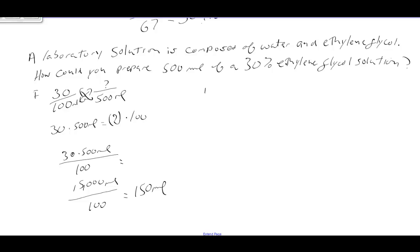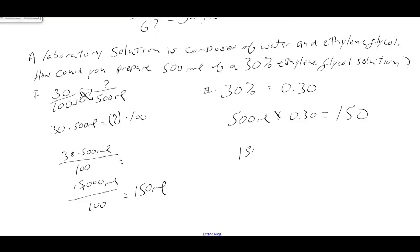Strategy two: the decimal form of 30% is 0.30. So 500 mL times 0.30 equals 150 mL. We'll have 150 mL of ethylene glycol and then bring it to volume with 350 mL of water.